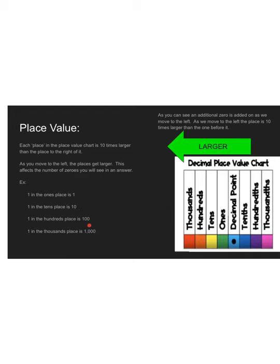As I move to the hundreds, it has two zeros on it — it's a hundred. As it moves to the thousands, it has three zeros on it — it's a thousand. To show that it's literally 10 times larger: 1 times 10 is 10, 10 times 10 is 100, 100 times 10 is 1,000. Each one of them is literally being multiplied by 10. Every place value is 10 times larger than the one before it.